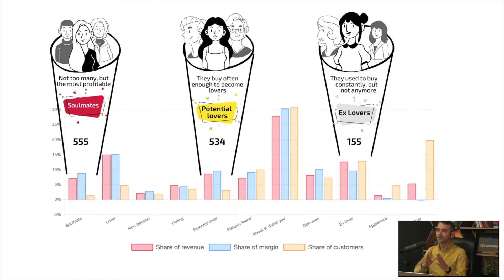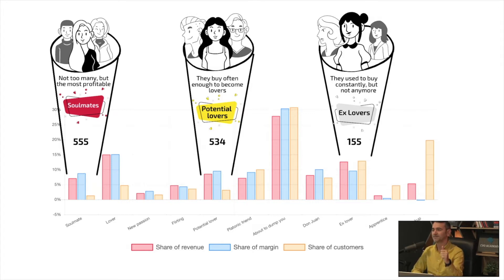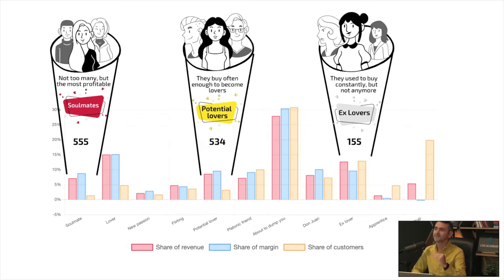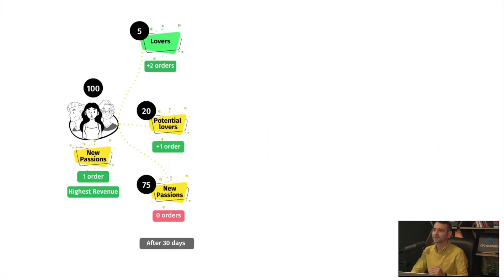You end up with separate customer types: 555s — those with the highest scores for recency, frequency, and monetary value — are the Soulmates. Then come Potential Lovers, and then Ex-Lovers. Ex-lovers are those with the lowest score for recency but the highest for frequency and the highest for monetary value. That's a visual representation of how this works.